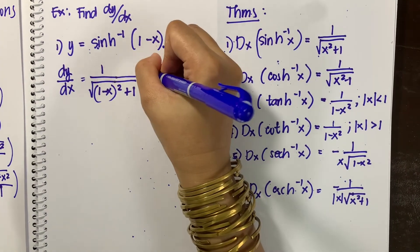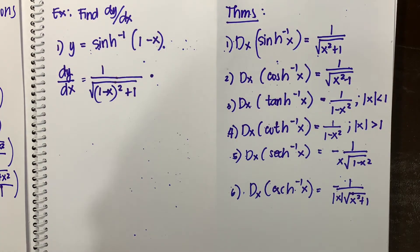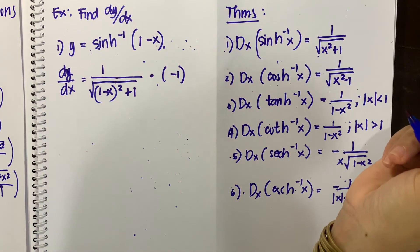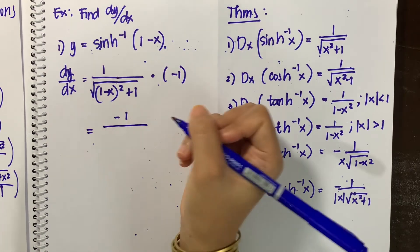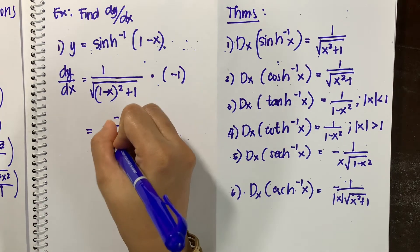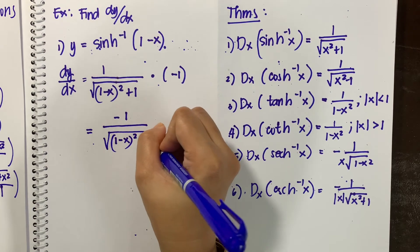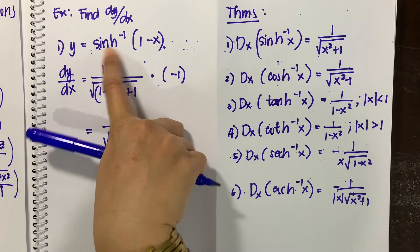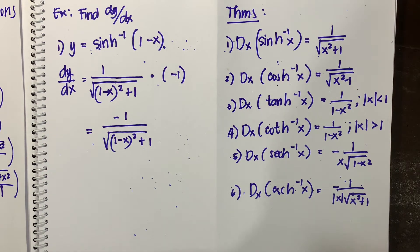By the chain rule, we multiply by the derivative of 1 minus x, which is negative 1. Simplifying, we get negative 1 all over the square root of the quantity 1 minus x squared plus 1. This is the derivative of the inverse hyperbolic sine of 1 minus x.